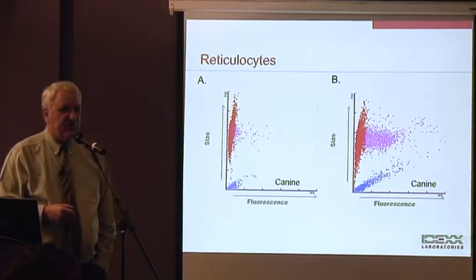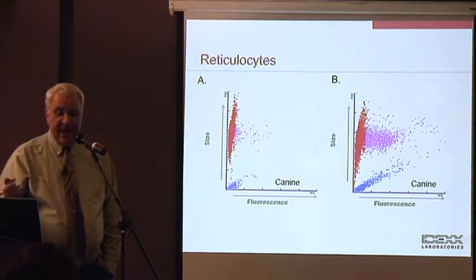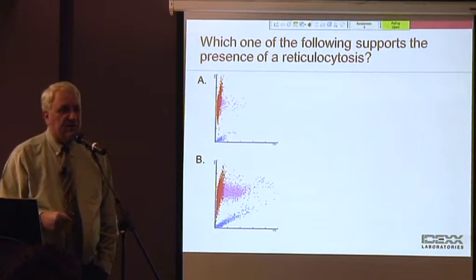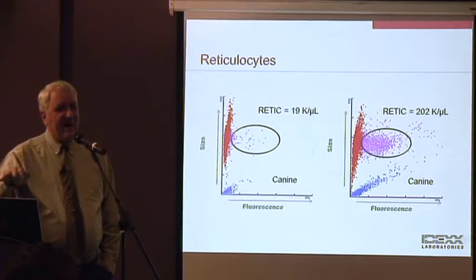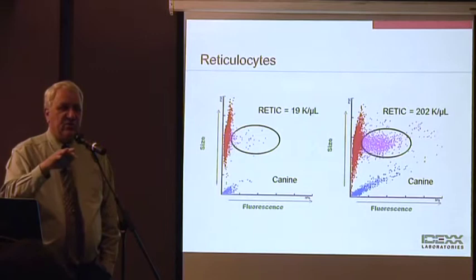I've got two dot plots here from two patients, and I'm going to ask you which one is showing the reticulocytosis. Which one of the following supports the presence of a reticulocytosis? Good. Again, it's not rocket science, right? But why do I need that? Well, just by identifying that that sample on the right has the reticulocytosis is demonstrating that you're validating the data that's generated. Just looking at the picture right away, you can say, yeah, there's a bunch of cells where they're supposed to be, so the instrument did identify them as reticulocytes. You immediately validated something just by looking at the dot plot.